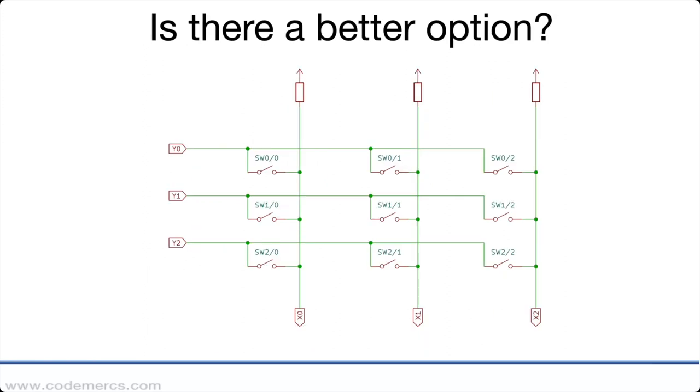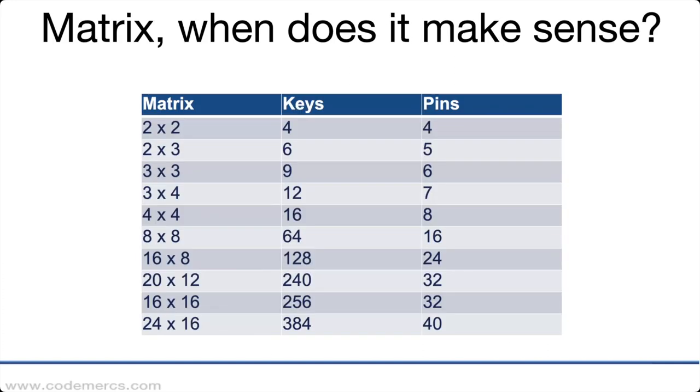In a matrix, the key resides at the cross point between an x and a y line. This reduces the number of pins required to read the matrix. As you can see here, already with six keys in a two by three matrix you need only five pins versus six pins for a direct connection. And when you go for a typical matrix size like 16 by 8, you can serve 128 keys with only 24 pins.